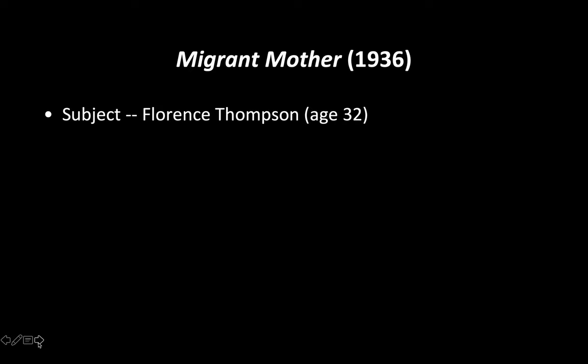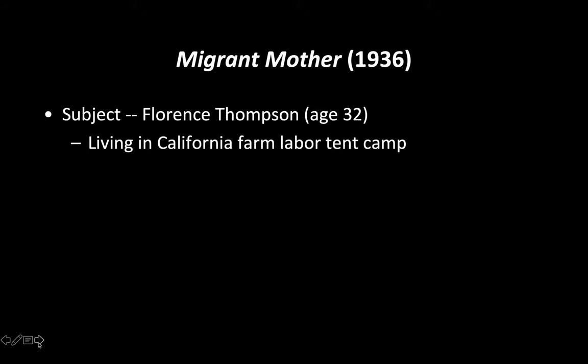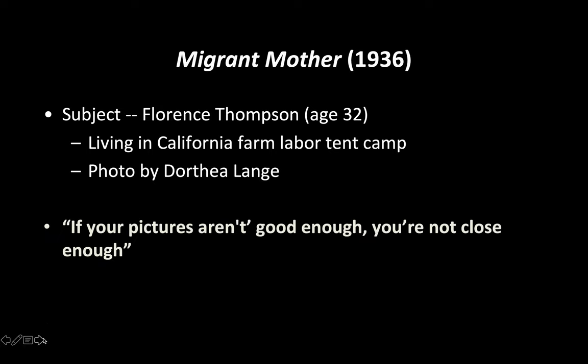A little background on this image: it is called the 'Migrant Mother,' taken in 1936. This is Florence Thompson, who was living in California in a farm labor tent camp — again taken by social documentarian Dorothea Lange. A problem with this image: it turns out it was actually posed, and this upset a lot of people. They felt it took away from the impact. We've had a discussion on ethics in previous lectures — do you think it changes anything? Nonetheless, it was still a really powerful and iconic image of the Great Depression.